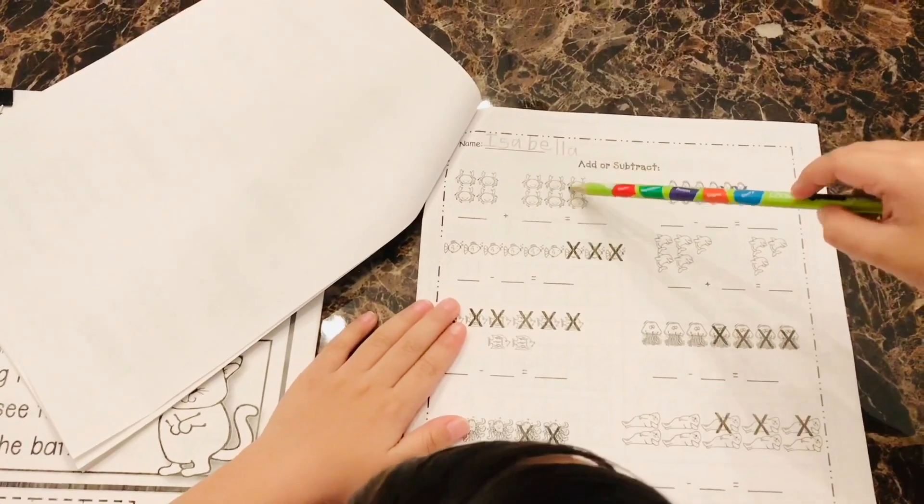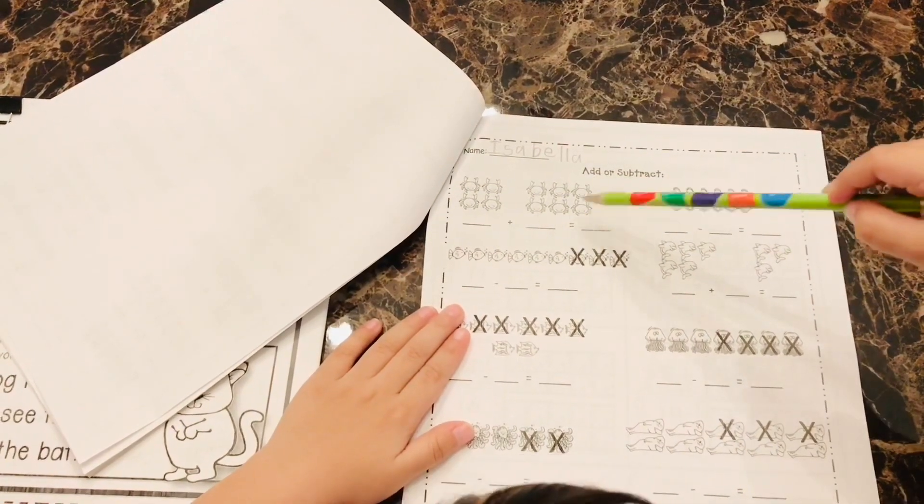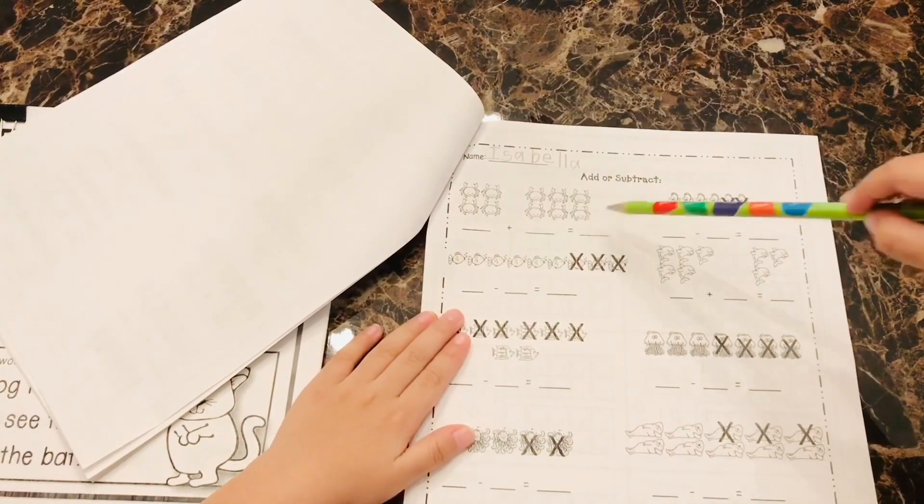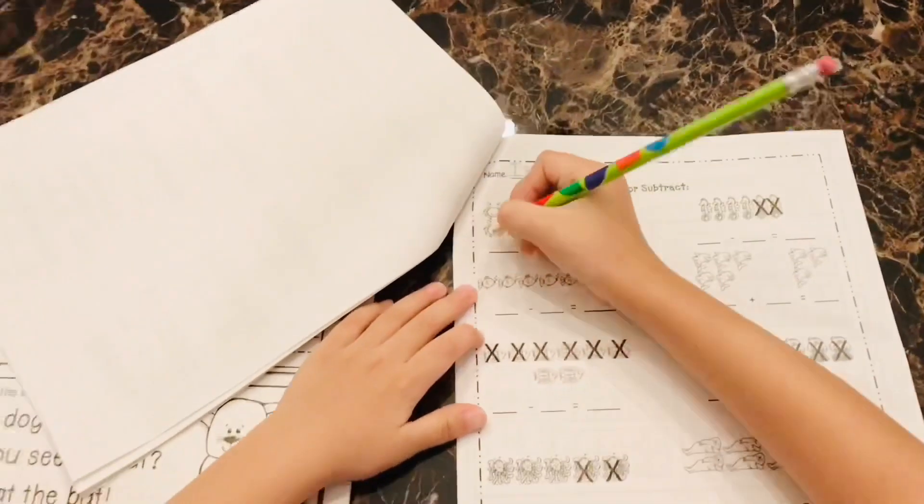Now we're gonna start. We're gonna count in the left side and put the answer here, put the number here, and then put the answer right over here. That's so good. Now we're gonna start. Did you count already? Yeah, okay, go right.